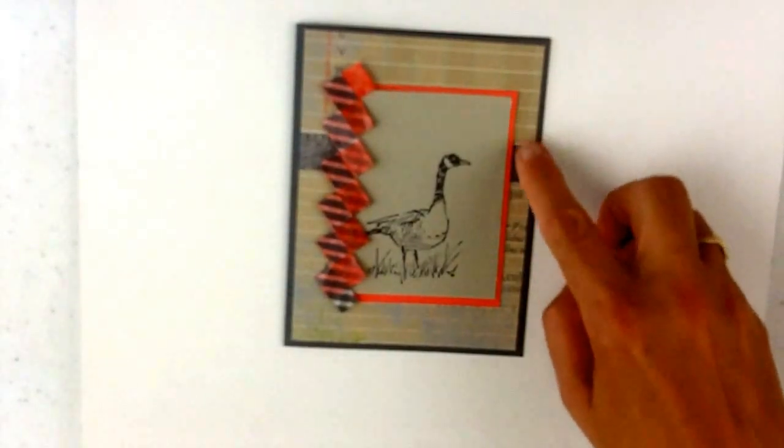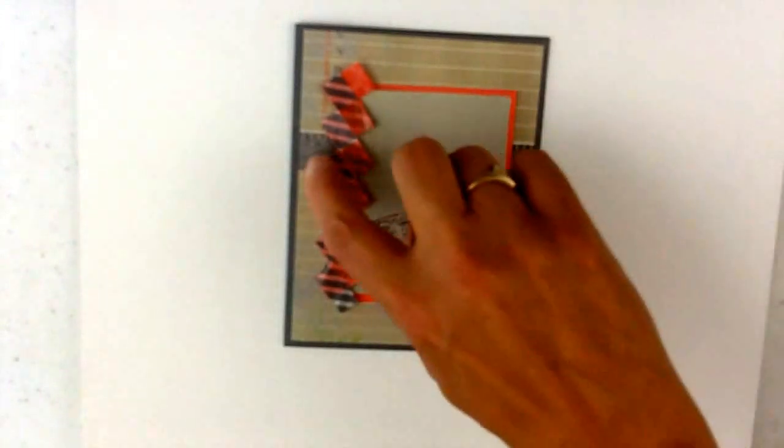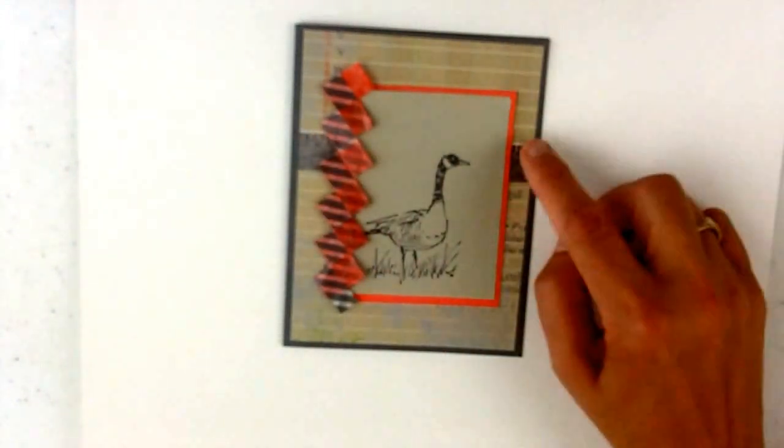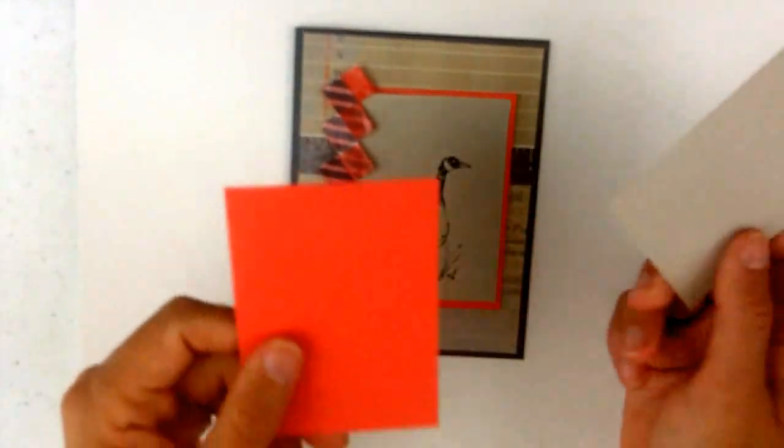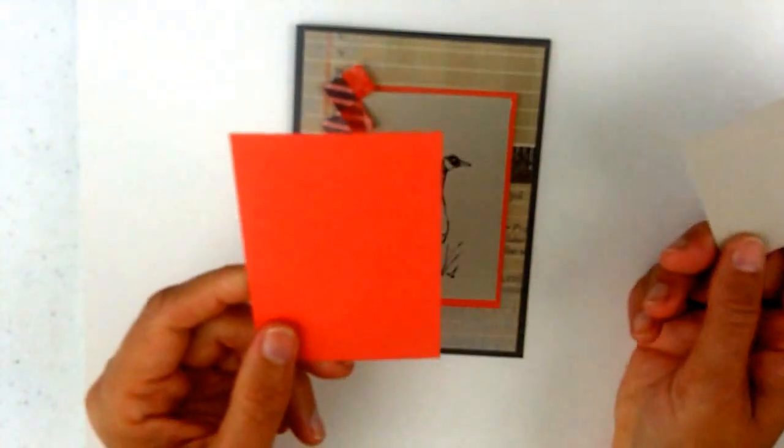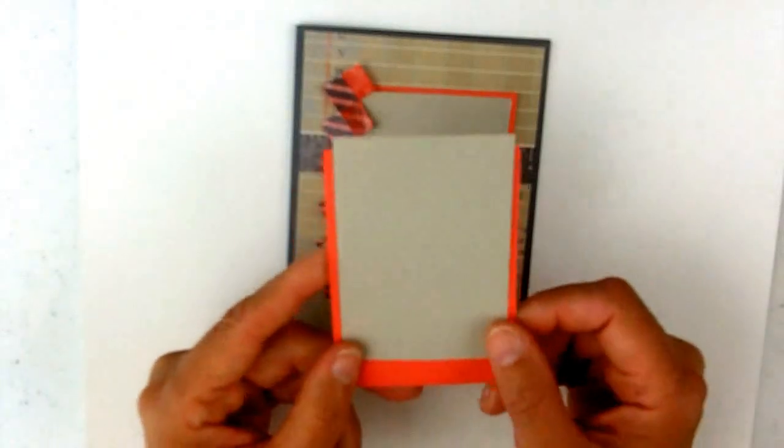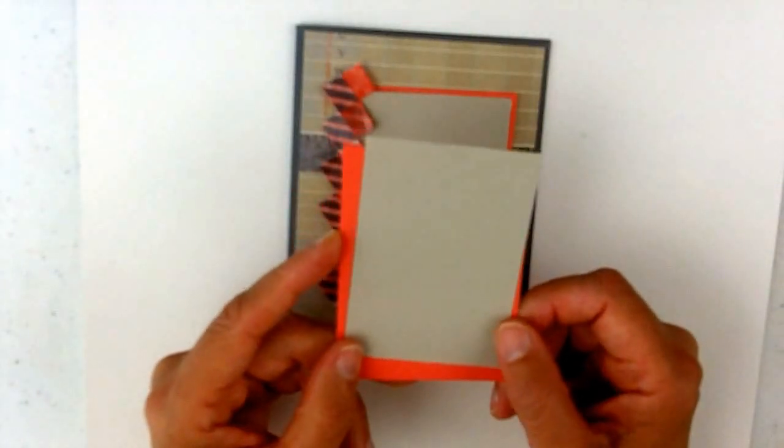I loved this piece of paper because it looks like another element going across it, just kind of a fun look. And then for these two things I have a Calypso Coral that is three and three quarters by two and three quarters, and a piece of Sahara Sand that's three and a half by two and a half.